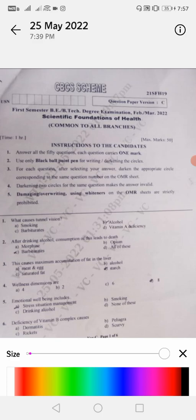First question: what causes tunnel vision? The correct answer is B, that is alcohol. Carefully go through all the questions from first to last 50th question. Second question: after drinking alcohol, consumption of this leads to death - morphine, opium, barbiturates, and all of this. For the second question I will put the answer in the comment section. I am expecting from you what is the correct answer, whether it is barbiturates, opium, morphine, or all of this. Put it in the comment section.